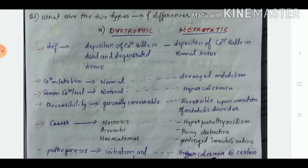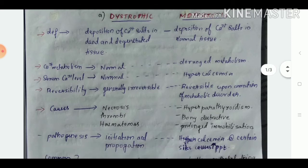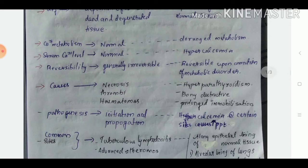Metastatic calcification is deposition of calcium salts in normal tissues. Calcium metabolism in dystrophic is normal, whereas in metastatic it's deranged metabolism. Serum calcium level is normal in dystrophic, whereas hypercalcemia is present in metastatic.